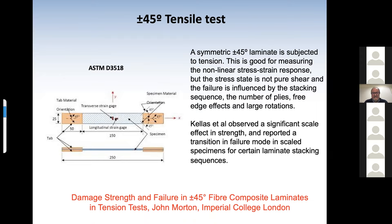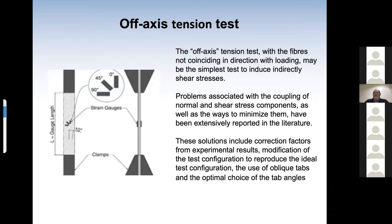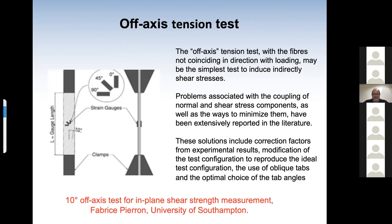Another promising test is the off-axis tension test, performed with fibers not coinciding in orientation with the loading direction. It may be considered the simplest test to induce indirect shear stress because applying tension is the easiest way to work in a lab. Problems associated with the coupling of normal and shear stress components arise, as well as the ways to minimize them. Solutions include correction factors from experimental results, modification of the test configuration, the use of oblique tabs, and the ultimate choice of tab angles. Fabrice Pierron from the University of Southampton will illustrate all this.